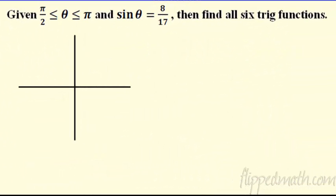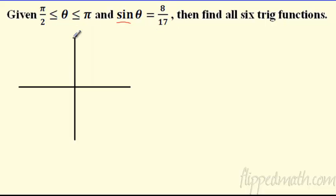Let's put it all together: reference triangles plus reciprocal functions. Given that theta is between 90° and 180° — quadrant two — and sine of theta is 8 over 17, find all six trig functions. Draw the reference triangle in quadrant two with theta touching the x-axis. Sine is opposite over hypotenuse, so the opposite side is 8 and the hypotenuse is 17.